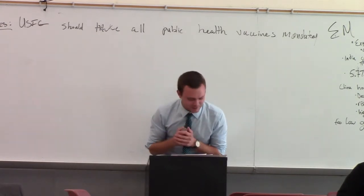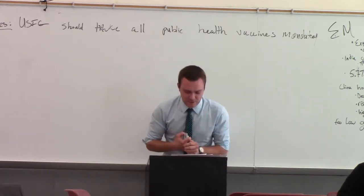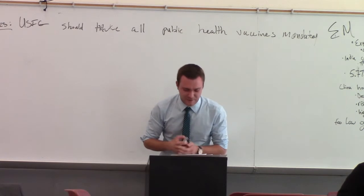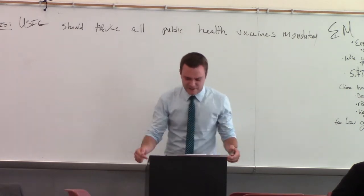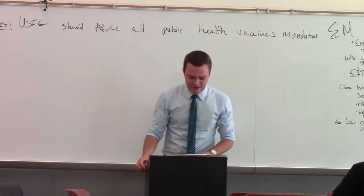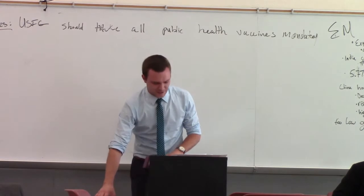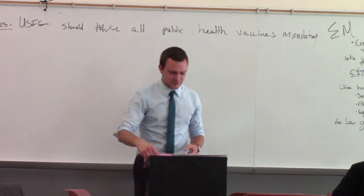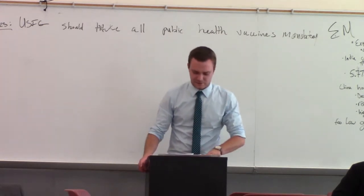The second argument under the solvency is that the government must pay and provide for this. As a result, they can use mechanisms established through the ACA to be able to distribute the public health services necessary to provide vaccines for all Americans.